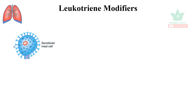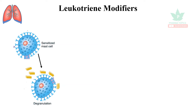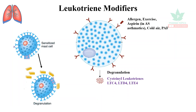When a mast cell becomes sensitized, it gets degranulated and releases lots of inflammatory mediators. When triggered by allergens, exercise-induced asthma, drugs, cold air, or platelet-activating factor, the mast cell degranulates and releases cysteinyl leukotrienes such as LTC4, LTD4, and LTE4.